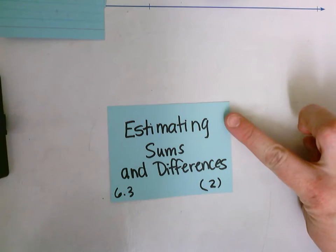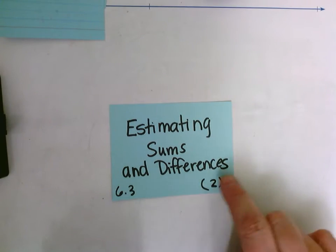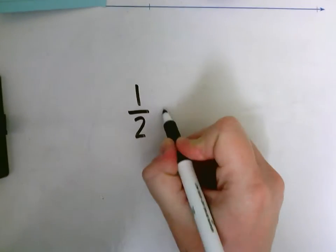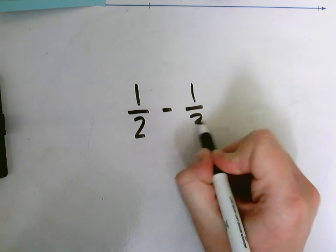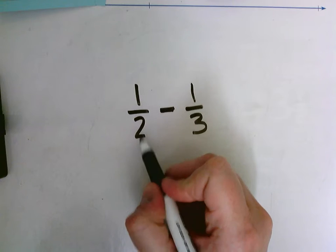All right, we're still talking about estimating sums and differences. Let's do a couple examples with differences, with subtracting fractions. So our first problem is going to be one half minus one third. Well, one half is already one of our benchmarks, it's already a half.